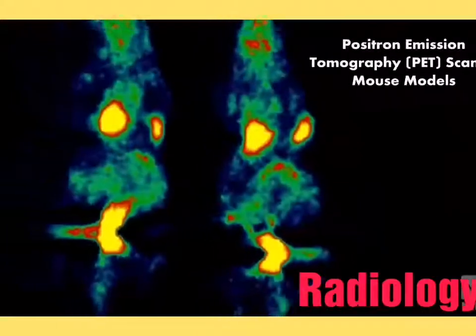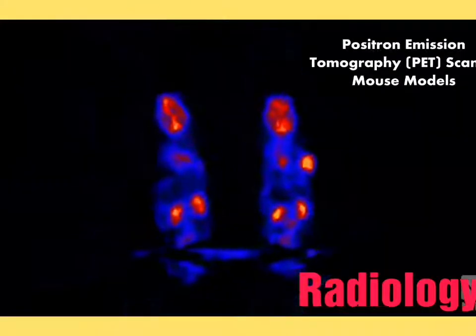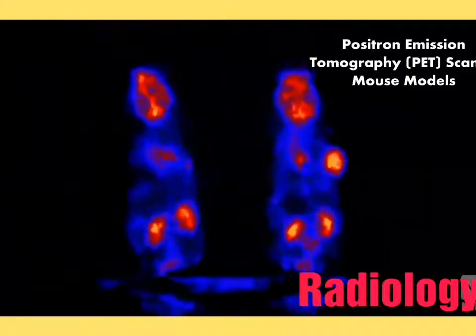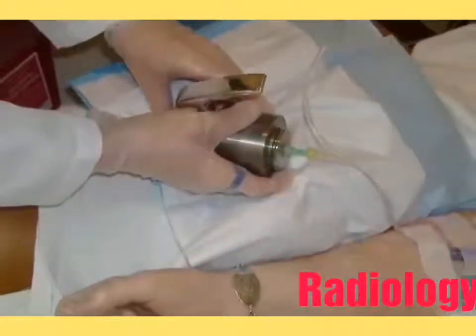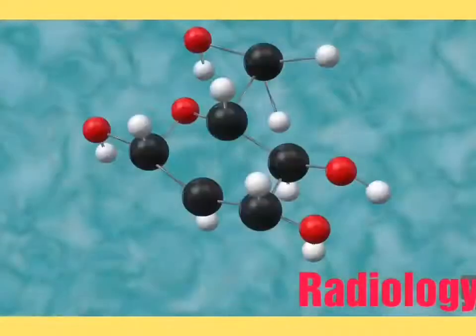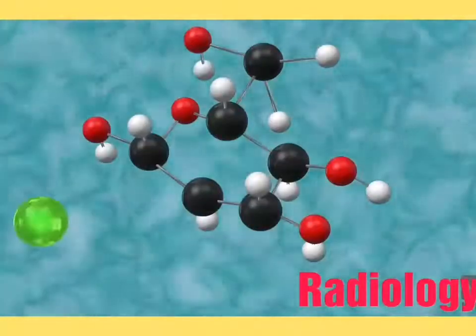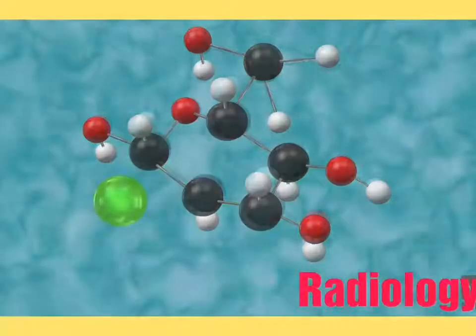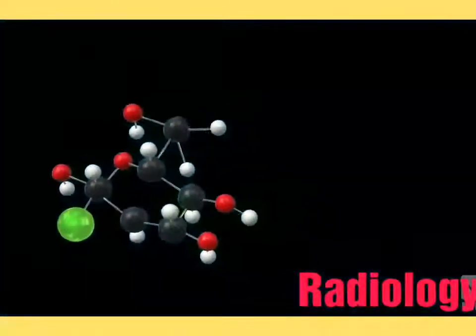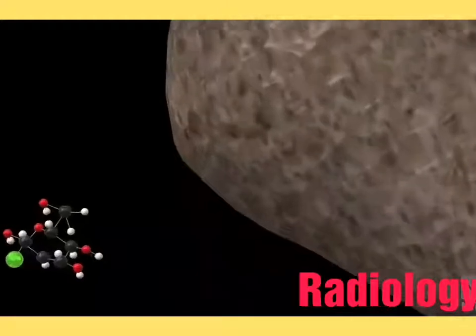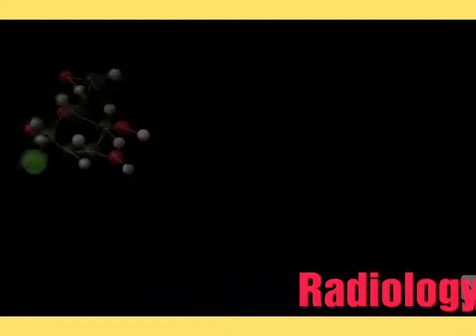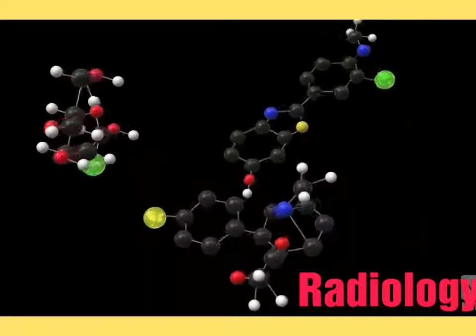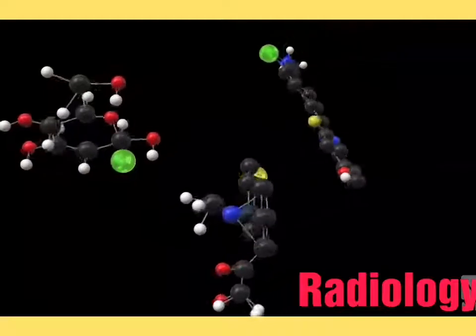A PET scan creates 3D images of the body. It does this by using radioactive tracers, which are usually administered to a patient through intravenous injection. The tracers are made up of carrier molecules that are tightly bonded to a radioactive atom called an isotope. The carrier molecule can interact with or bind to specific proteins or sugars in the body.